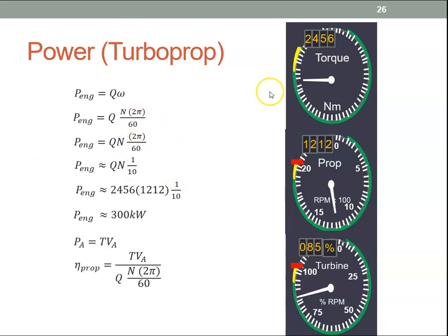So that divided by 60 is approximately 1 tenth. So we can say the power developed by the engine is approximately the torque times the RPM divided by 10. So in this case, we're developing 2,456 newton-meters of torque with an RPM of 1,212. So then the power developed by the engine is approximately 2,456 by 1,212 multiplied by 1 tenth, which gives us approximately 300 kilowatts.